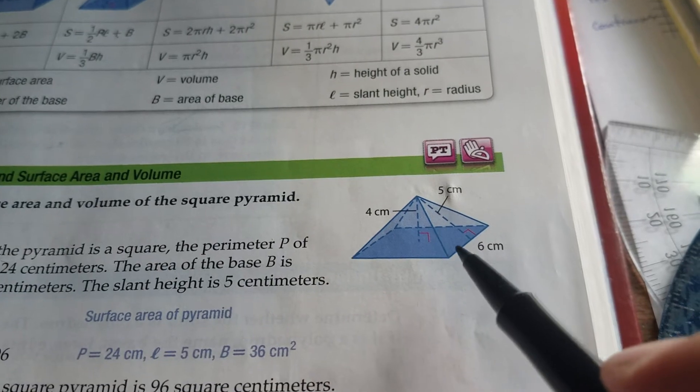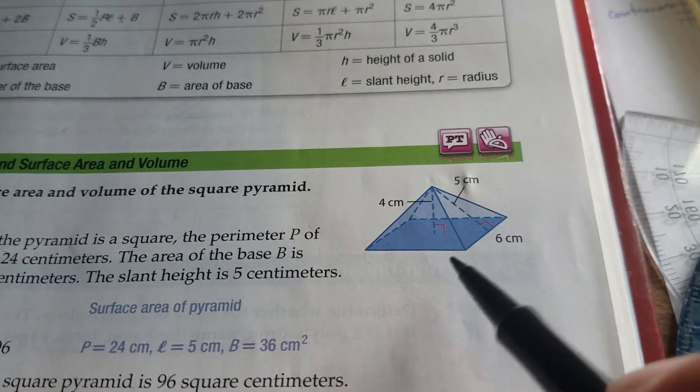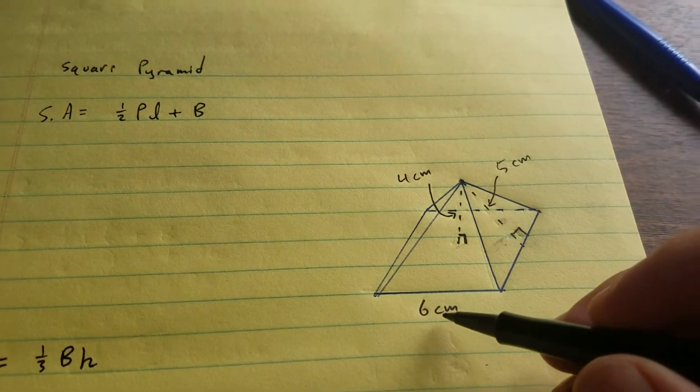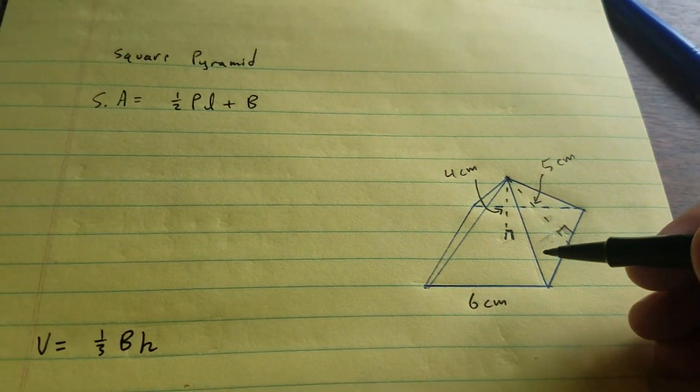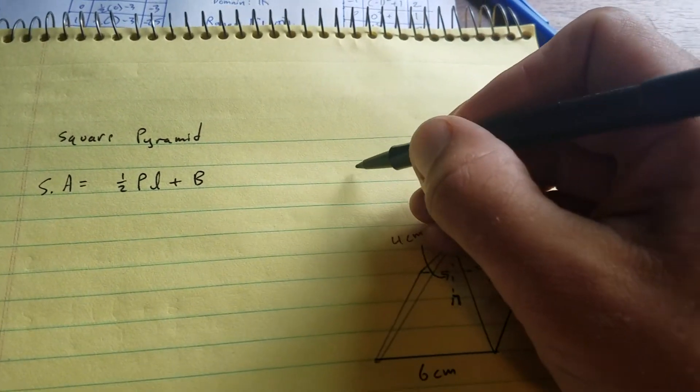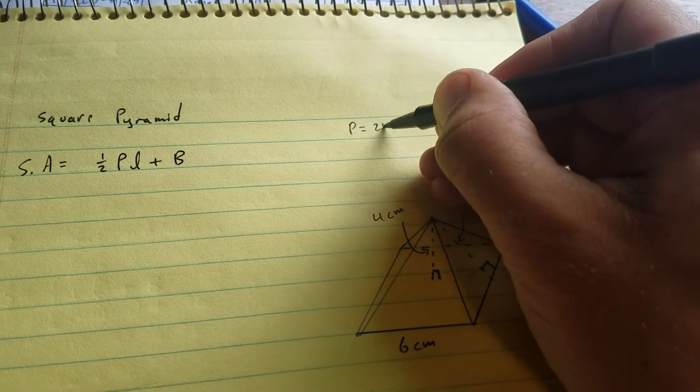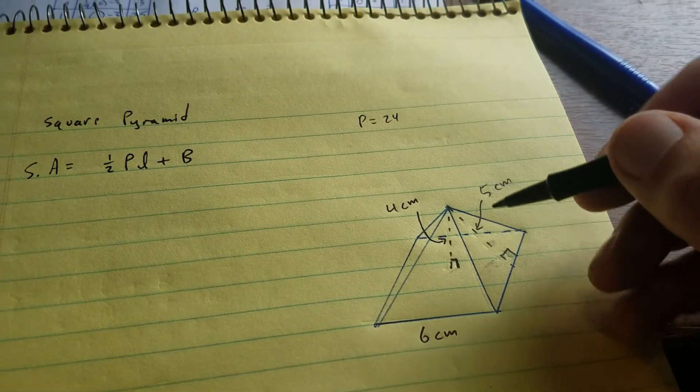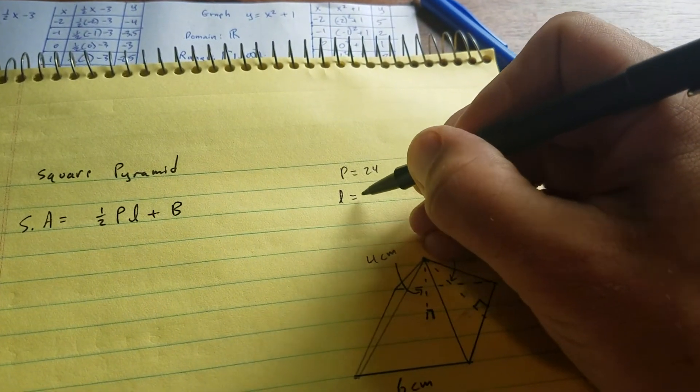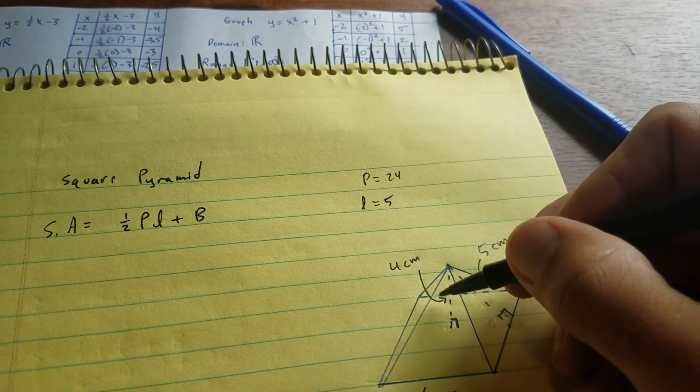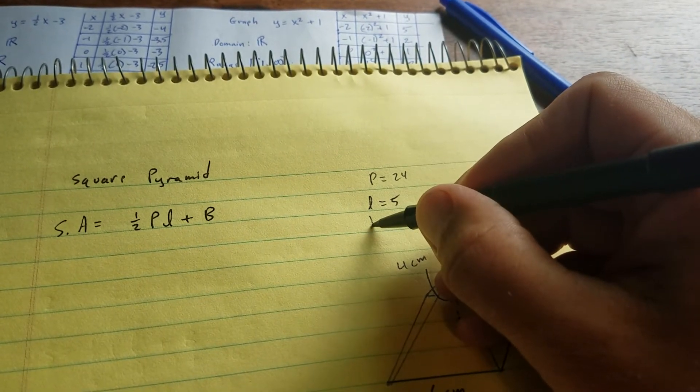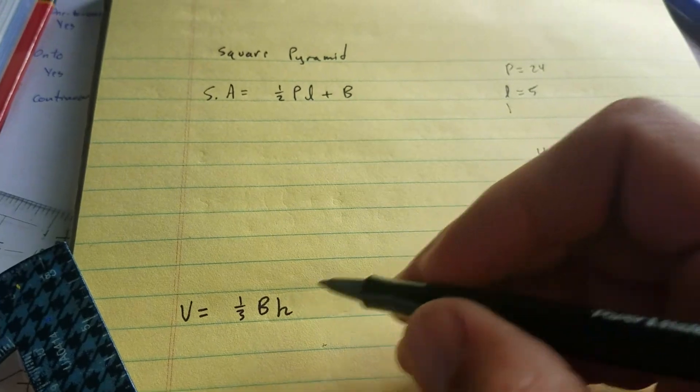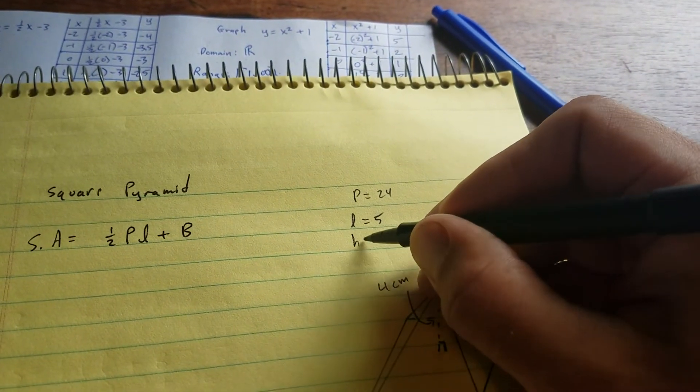Since the base is a square, the perimeter is going to be 24 because each side is 6, 6, 6, and 6. So perimeter P equals 24. The l stands for the slant length, which is 5, and the height is 4. We're going to use that height down here.